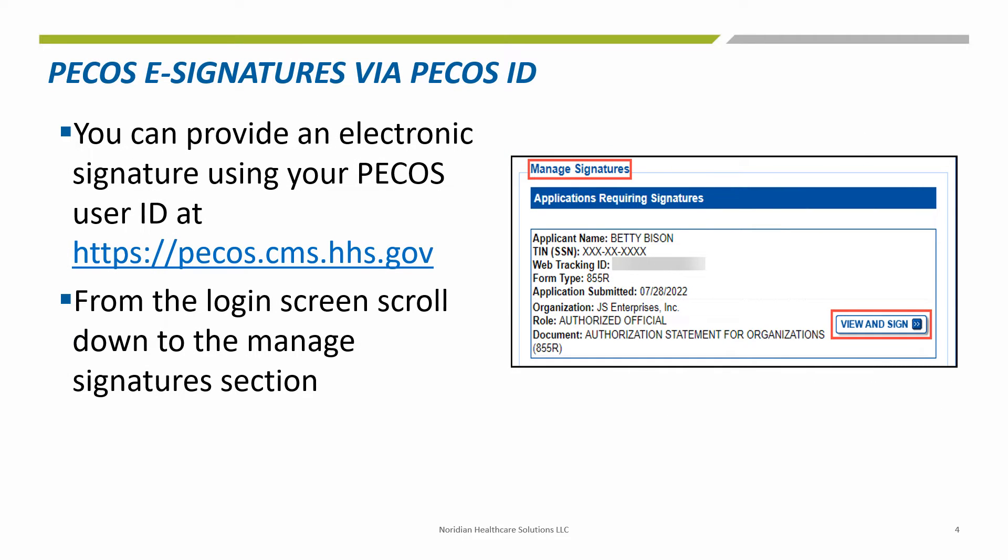You can provide an electronic signature by using your PECOS ID at the link provided on the screen. From the login screen, scroll down to the Manage Signatures section.